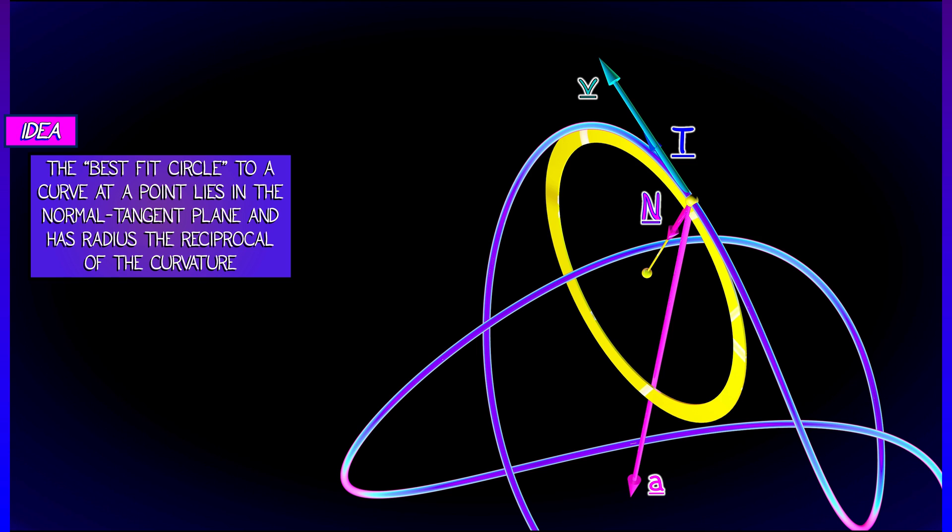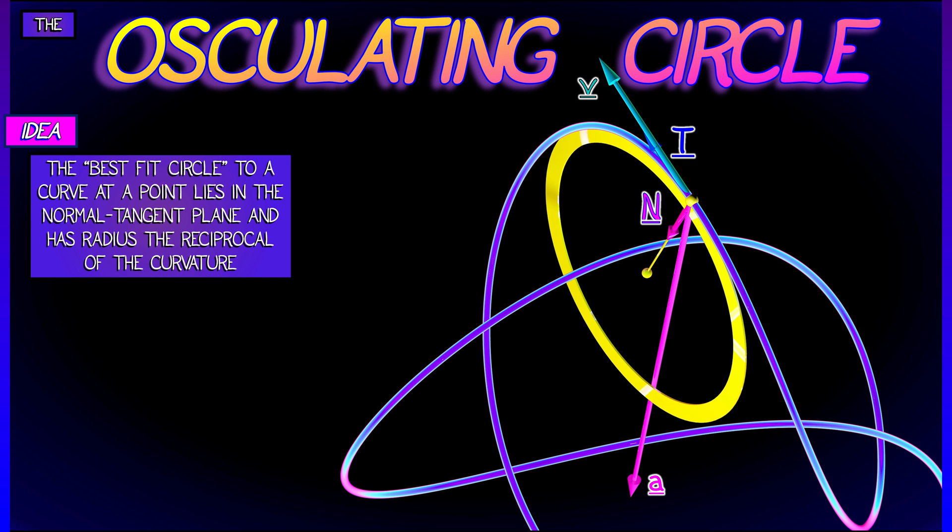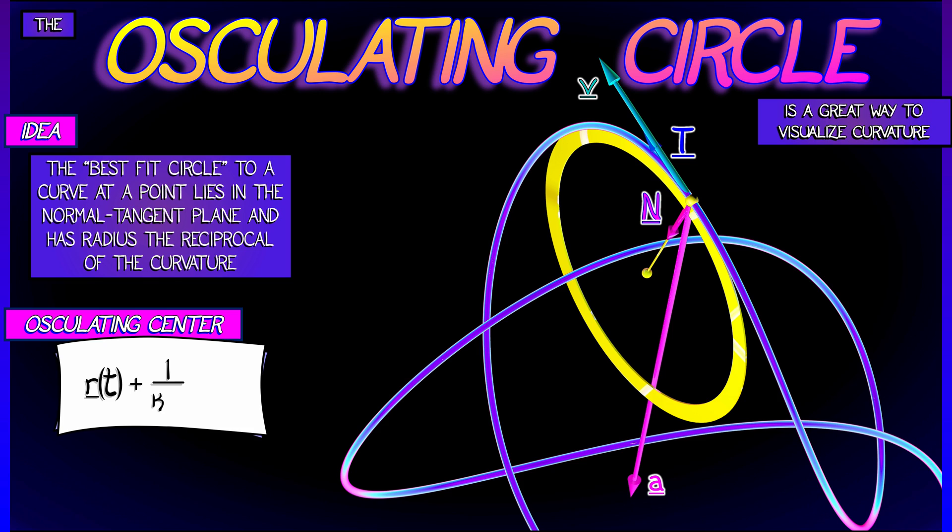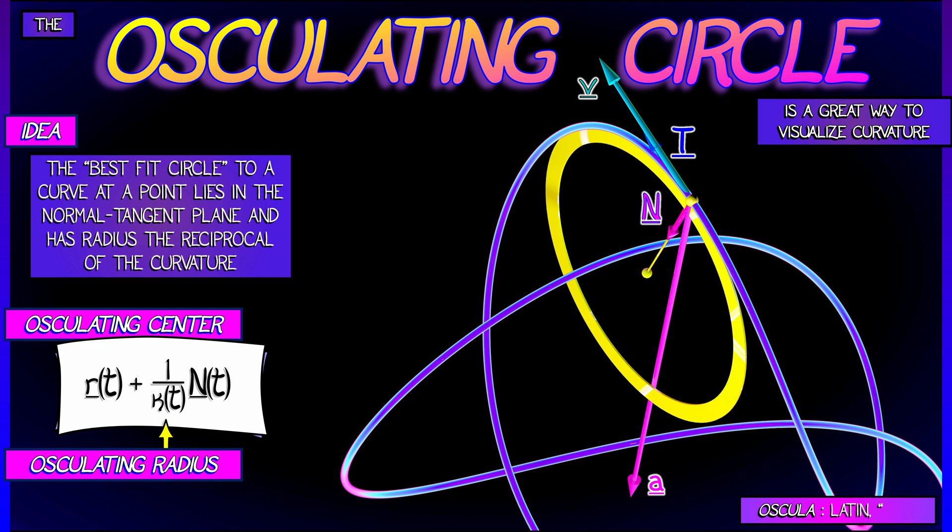A best fit circle is something like a second order approximation to the curve. And that best fit circle has radius equal to the reciprocal of the curvature. The circle is called the osculating circle. And it's pretty cool. It is a circle whose center is the position on the curve R(t) plus, well, you move in the direction of the normal vector by an amount 1/kappa(t). That 1/kappa is the radius of the osculating circle, or if you like the osculating radius.